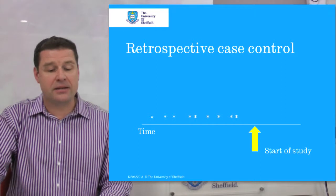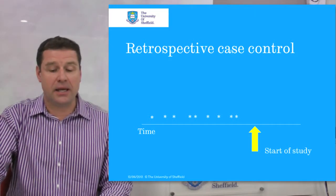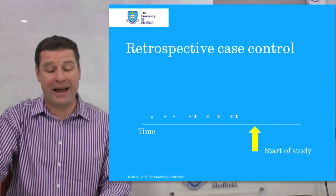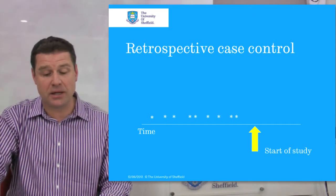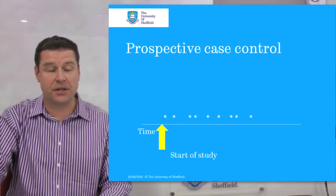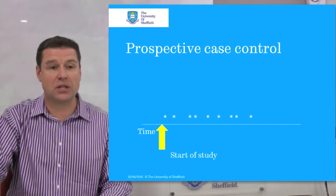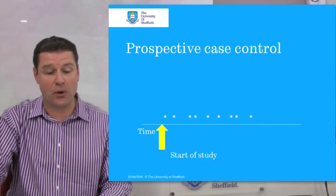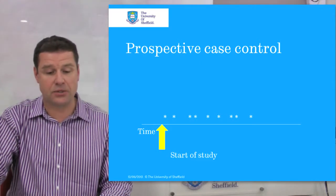Diagrammatically, in a retrospective case control study, you start the study and then look back in time to identify cases. Prospectively, it's the other way around: you start the study and then pick up cases as you go, as they become diagnosed.